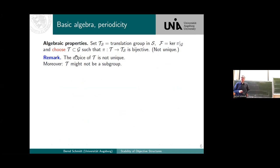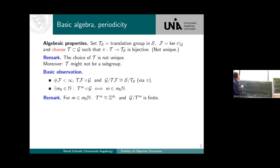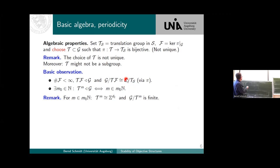The only requirement is that if I project onto the second component, it should be a translation. In some sense I'm taking a section of the translation group in the big group. This has some disadvantages because this choice is not unique, and there are situations where you cannot even make it into a group. Nevertheless, we can choose it. The basic observation is that if we check the kernel of this projection onto the second part, and take T times the kernel, we get a nice normal subgroup of G.